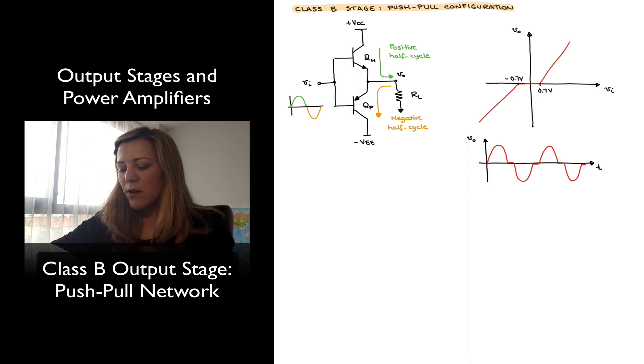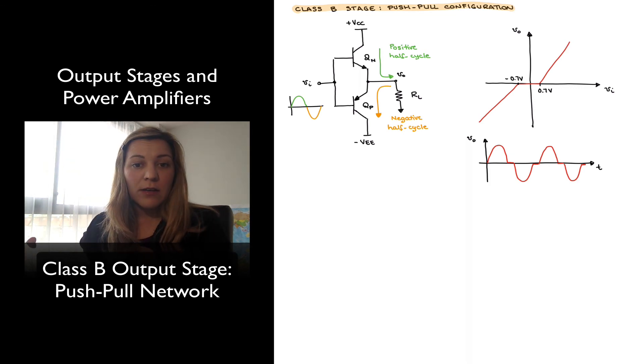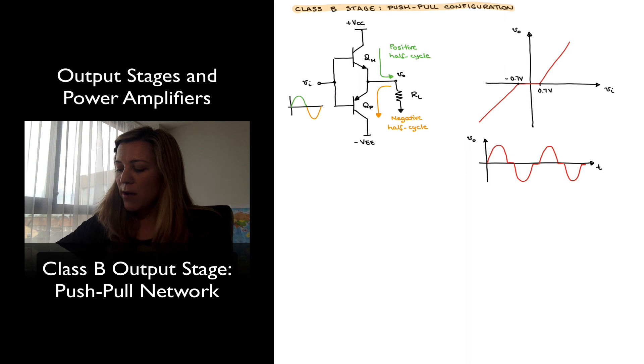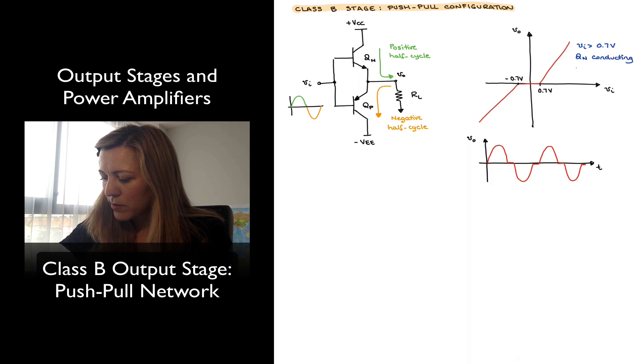But notice that in order for the input voltage to forward bias the base-emitter junction, that input voltage needs to exceed the turn-on voltage for the transistor. And for a silicon transistor that's going to be around 0.6, 0.7 volts, and so you can see there that the output voltage only starts following VIN after VIN has exceeded 0.7 volts on the positive side, or after VIN becomes lower than negative 0.7 volts on the low side. So we could represent that as when VIN is greater than 0.7 volts, we will have QN is conducting, and QP is in cutoff.